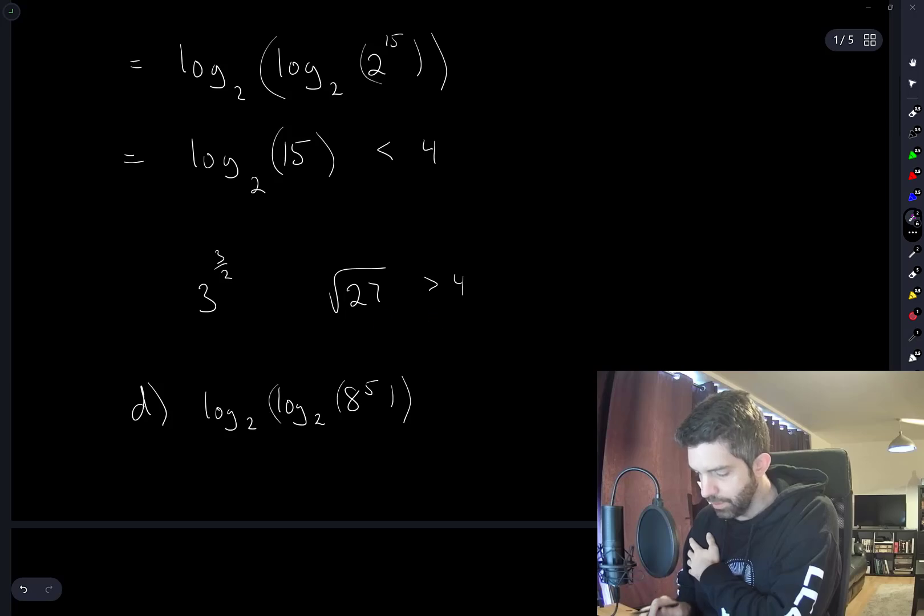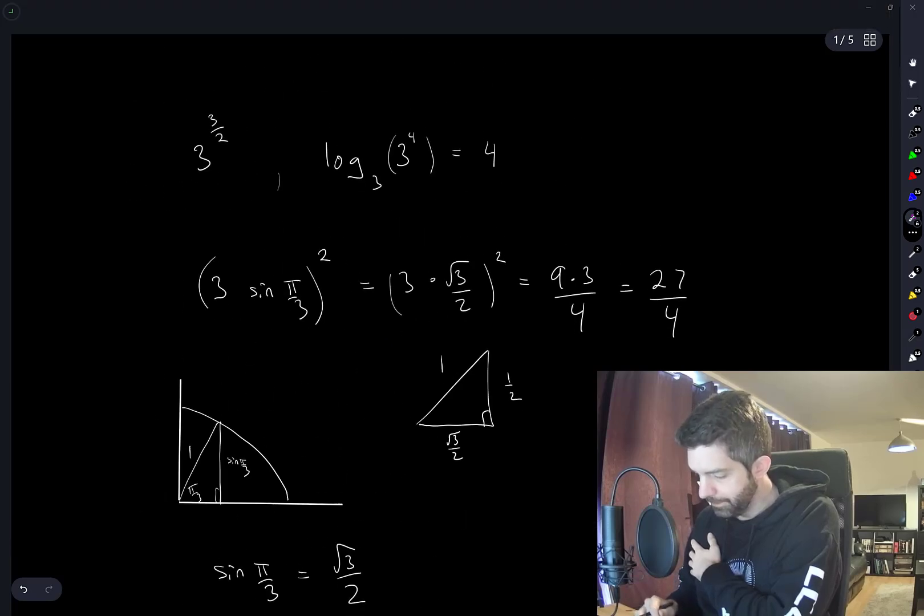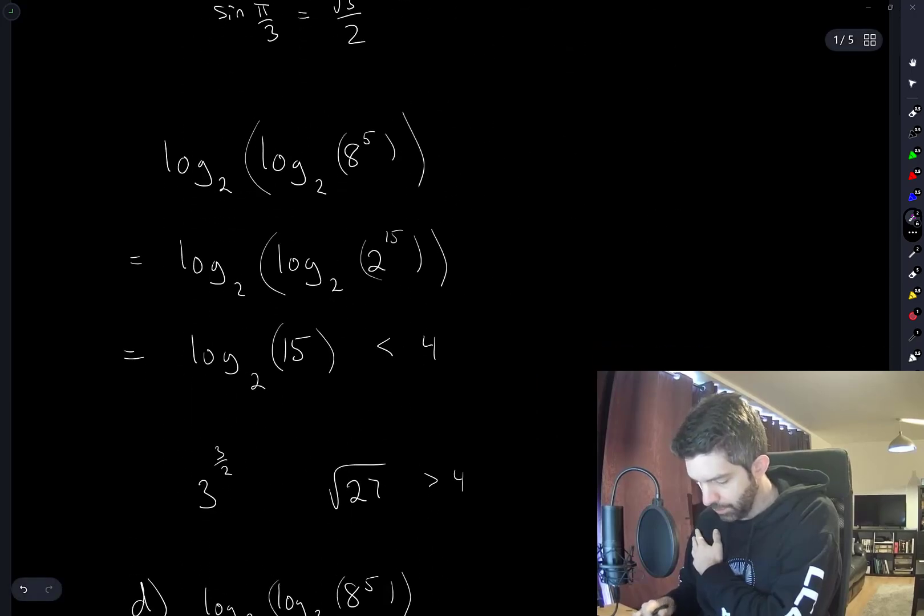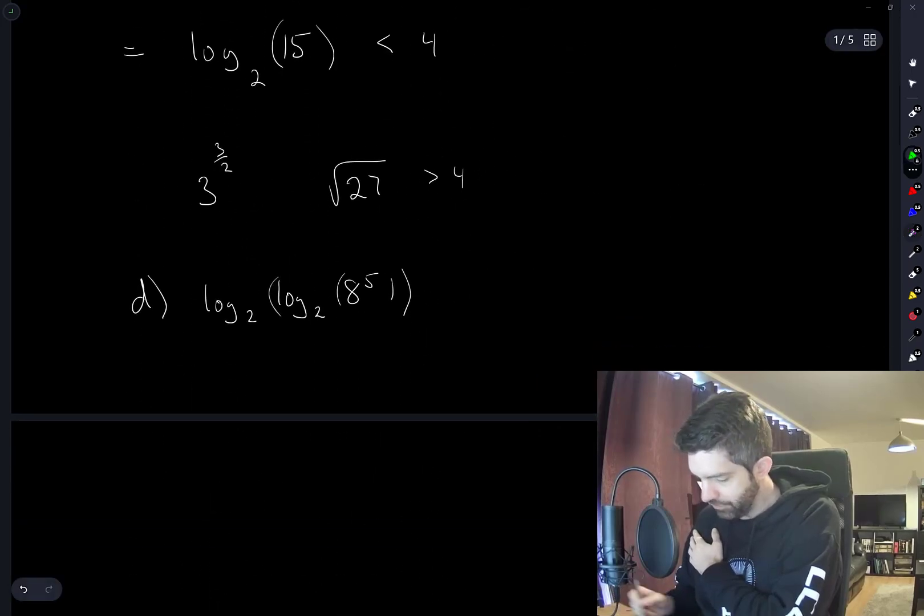Yeah, square root of 27 is greater than 4. This thing is less than 4. And the others were greater than or equal to 4. So that'll be my answer.